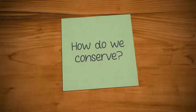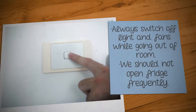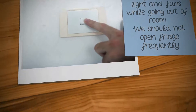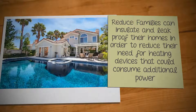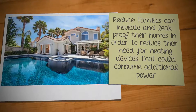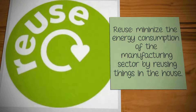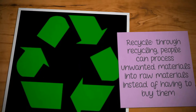How do we conserve? Always switch off lights and fans while going out of a room. We should not open the fridge frequently. Reduce: families can insulate and leak-proof their homes in order to reduce their need for heating devices that could consume additional power. Reuse: minimize the energy consumption of the manufacturing sector by reusing things in the house.